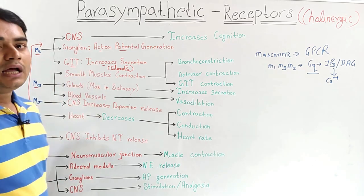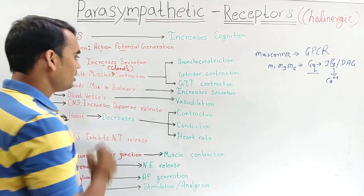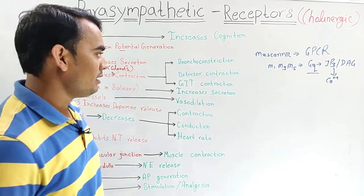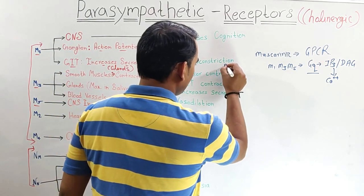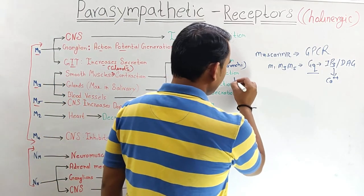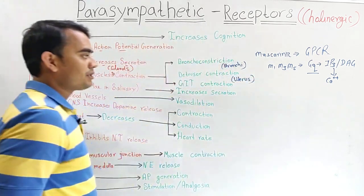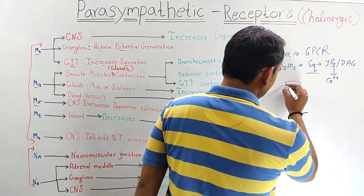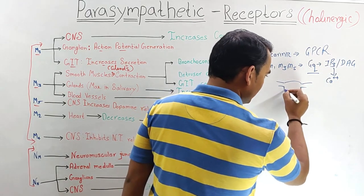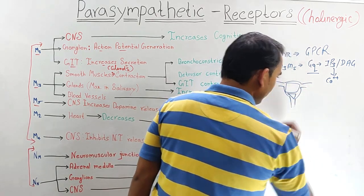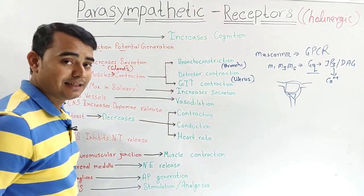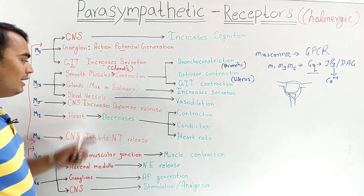M3 receptor is located in smooth muscles — in all smooth muscles it leads to contraction. In the bronchi it causes bronchoconstriction. The detrusor muscles, present in the bladder, undergo detrusor contraction. In the GIT it also leads to contraction.